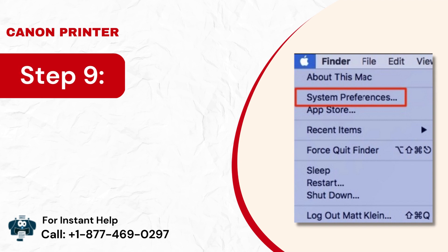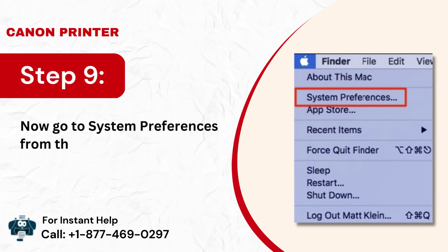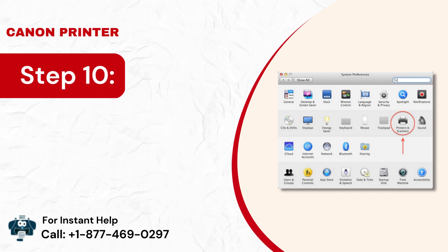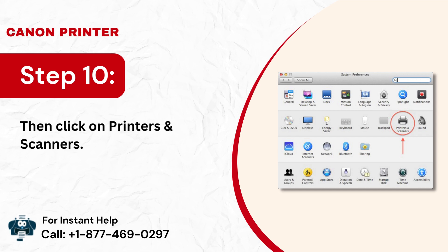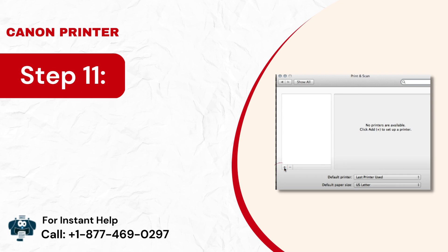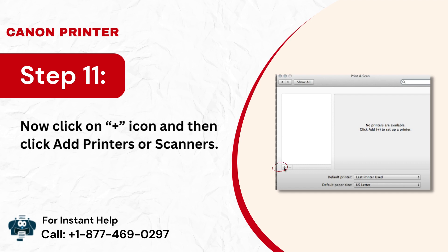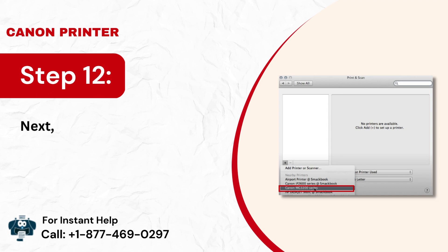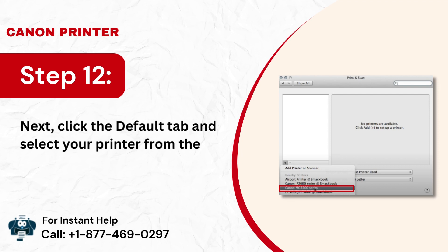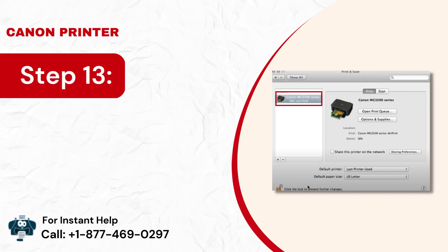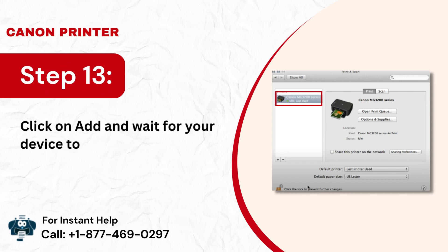Step 9: Now go to System Preferences from the Apple menu. Step 10: Then click on Printers and Scanners. Step 11: Now click on the plus icon, then click Add Printers or Scanners. Step 12: Next, click the Default tab and select your printer from the list. Step 13: Click on Add and wait for your device to add the printer.